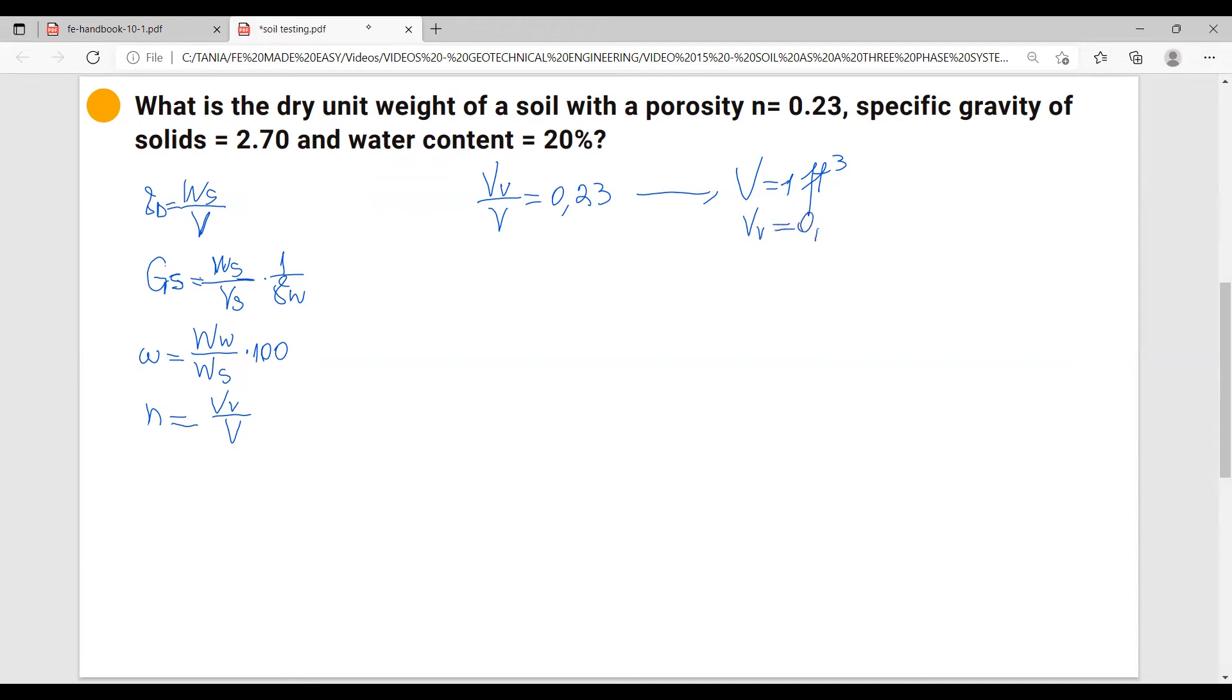And then we know volume of solids equals to total volume minus volume of voids, and that will be 0.77 cubic feet. Now we know all these things. We have to calculate - looking at our dry unit weight formula we need the total volume, which we already calculated here.